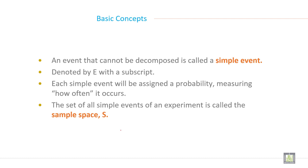An event that cannot be decomposed is called a simple event, denoted by E with a subscript. Each simple event will be assigned a probability measuring how often it occurs. The set of all simple events of an experiment is called the sample space, denoted by capital S.